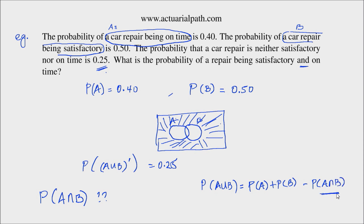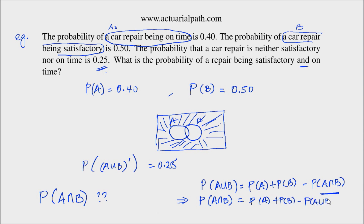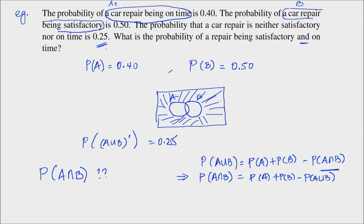I can make A intersection B the subject of the equation and get: the probability of A intersection B equals P(A) plus P(B) minus P(A union B). I have everything I need — P(A) is 0.4, plus P(B) is 0.5, minus the union.